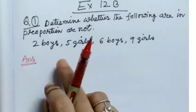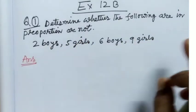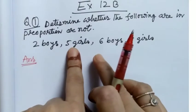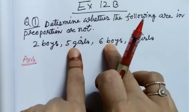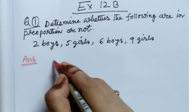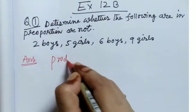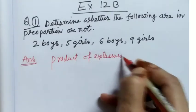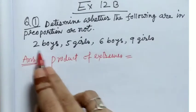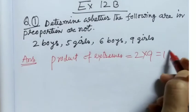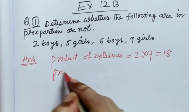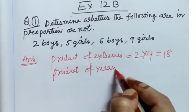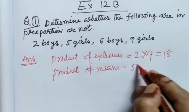So here, what are the extremes? 1st, 2nd, 3rd, 4th. 1st and 4th terms are extreme terms, and 2nd and 3rd terms are means. So let me write product of extremes is equal to 2 into 9 is equal to 18. And product of means is equal to 5 into 6, middle terms.